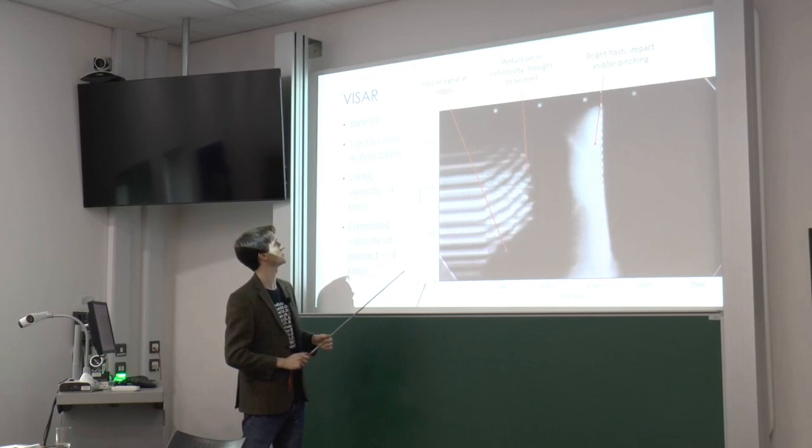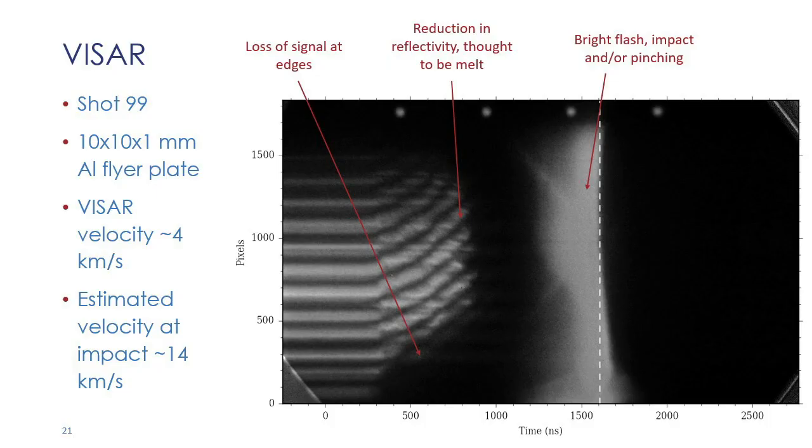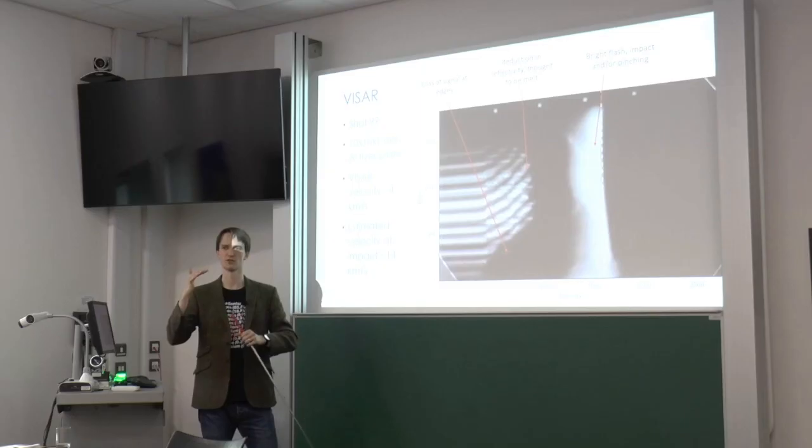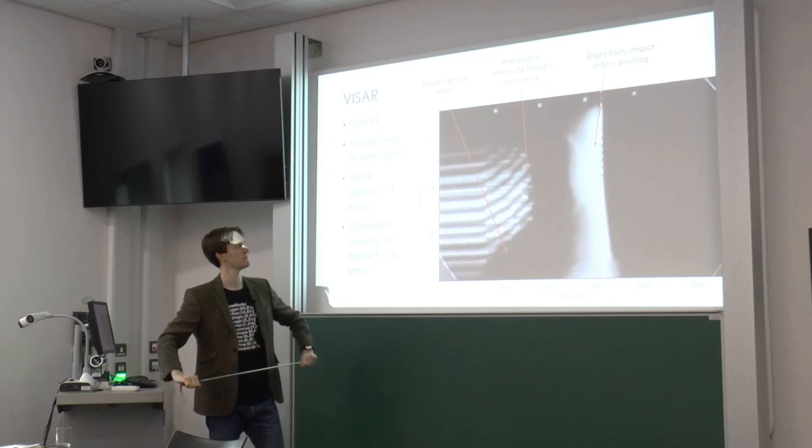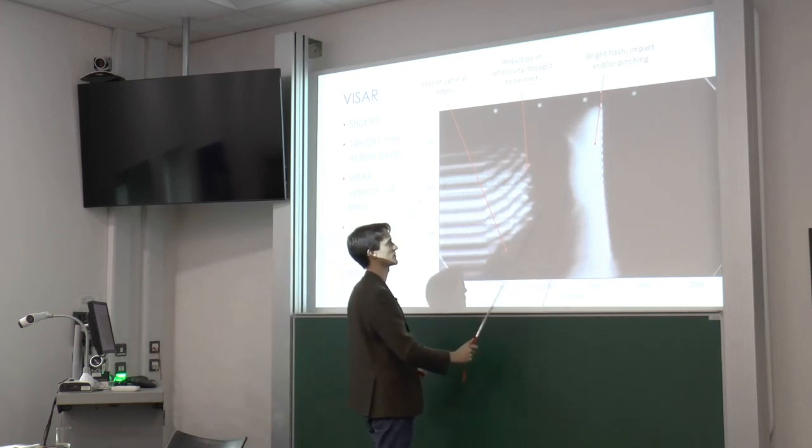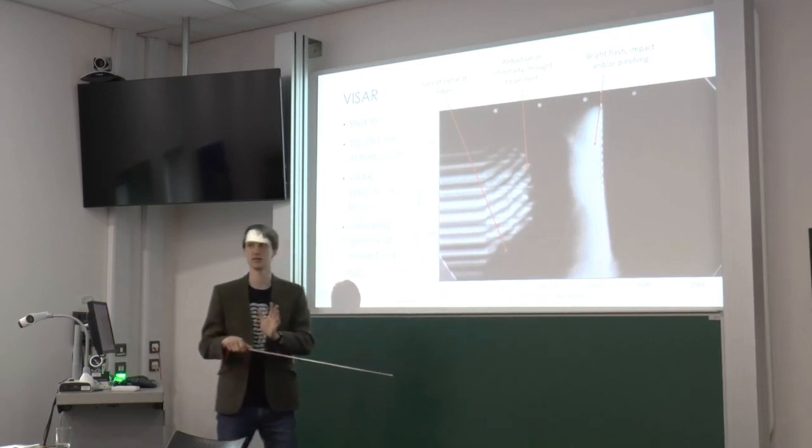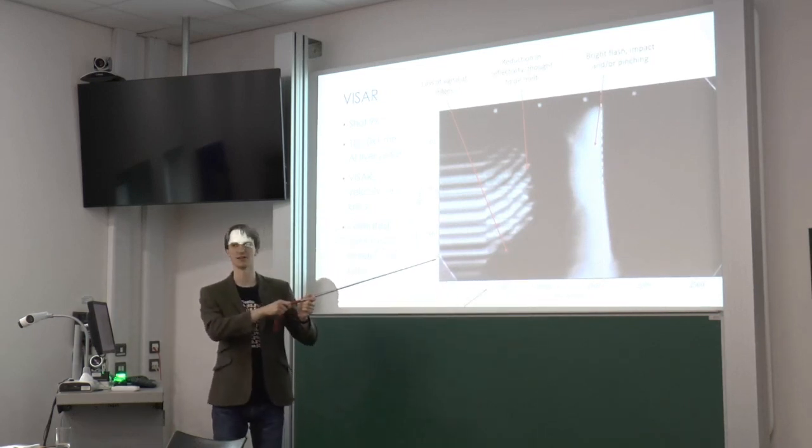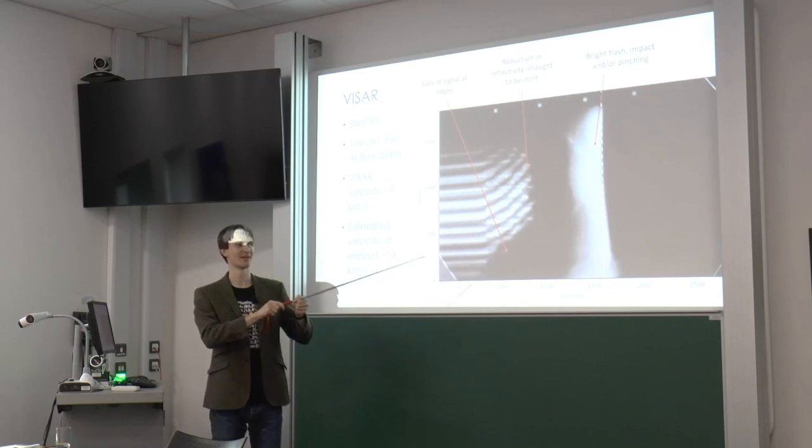This also shows some other typical features. We normally see loss of signal at the edges. We think because the projectile is distorting as it flies up. It does so at the edges first and the beam is reflected out of the path of the collection optics. We also see a bright flash, which is very tempting to think it's the projectile hitting into the target. Unfortunately, it's there when there's no target as well. So there's at least two mechanisms for the production of that bright flash.